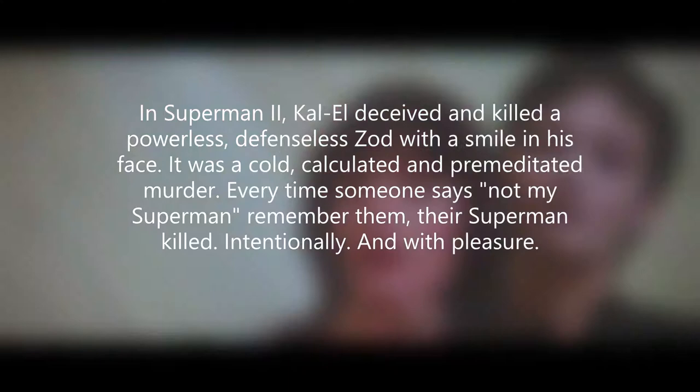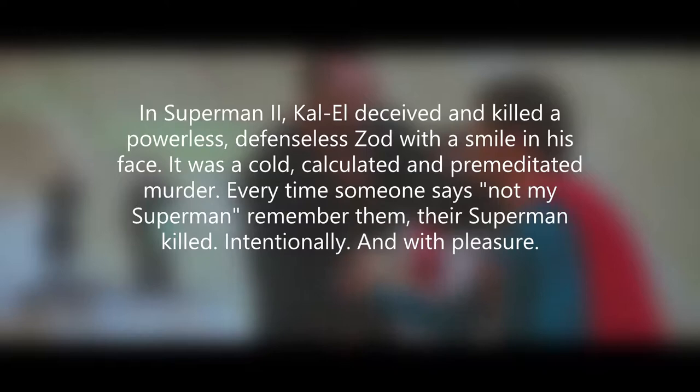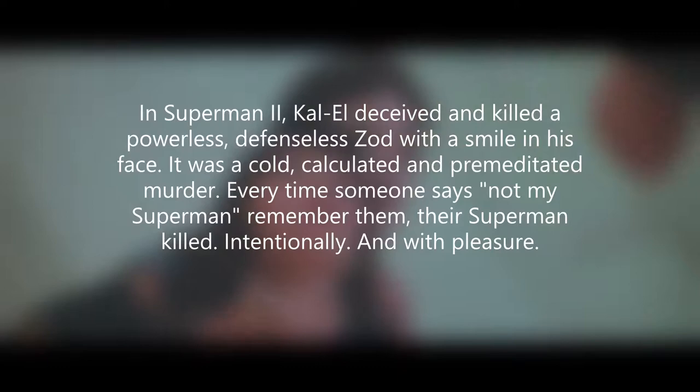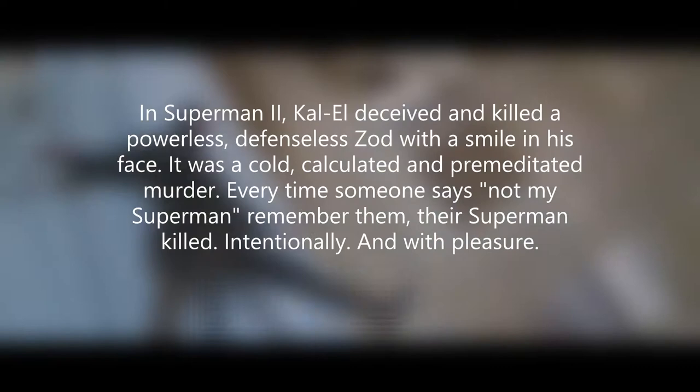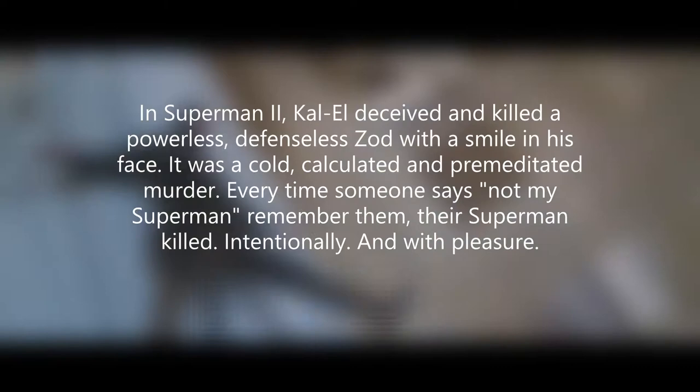In Superman 2, Kal-El deceived and killed a powerless, defenseless Zod with a smile on his face. It was a cold, calculated and premeditated murder. Every time someone says 'not my Superman,' remember them — their Superman killed. Intentionally. And with pleasure.